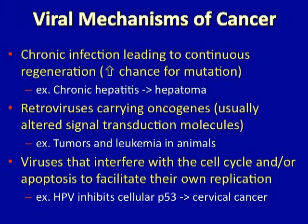Some viruses are associated with cancers, and there are three mechanisms by which this can happen. The first and possibly simplest are cancers induced by viruses that produce chronic infection. This is typical of the hepatitis viruses. Because they infect the liver, which is a regenerating organ, the persistent infection causes the liver to continue to regenerate hepatocytes. Because the liver is then under constant stimulus for growth, there is an increased chance for mutation to occur, leading to unrestrained growth, and hepatocellular carcinomas or hepatomas may evolve.